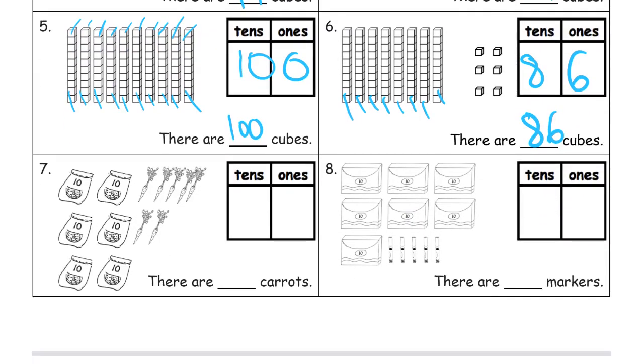And now here, if we're counting tens, there's one, two, three, four, five, six groups of ten. And how many ones are there? In carrots, we're looking at a five-group row, six, seven. That's 67 carrots.